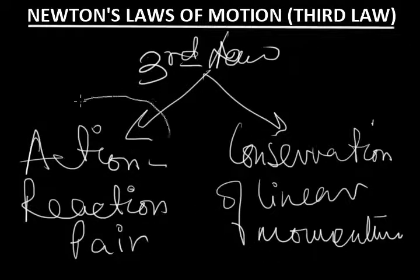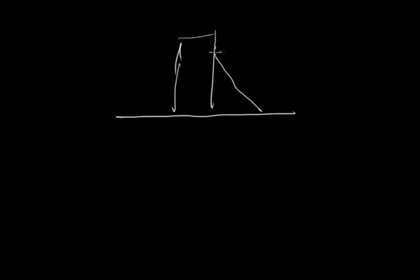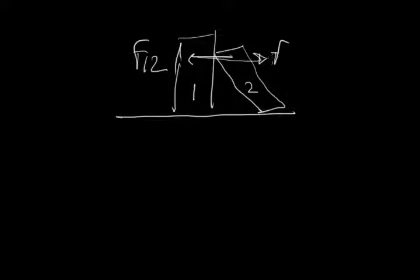Now the first thing that you need to learn about action and reaction is the fact that they never act on the same body. That is very important for us to understand. We have two bodies like this and if there is a force from here to there, there will be a force from here to there also. So if this body is one and this body is two, then this force is what we call as F12 and this is F21.